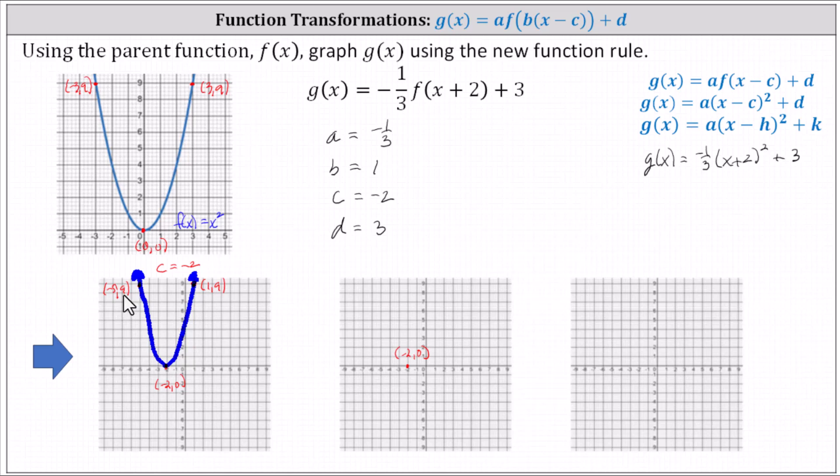And for the point one comma nine, again, nine times negative one-third is negative three, giving us the point one comma negative three. Let's go ahead and graph the new parabola.